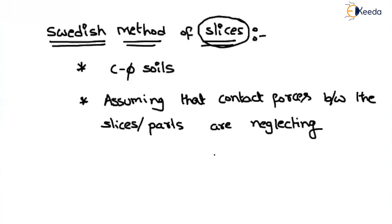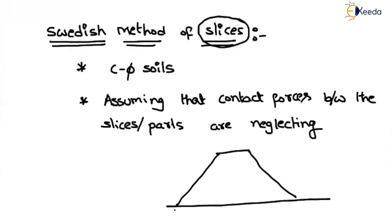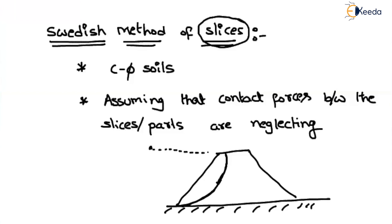Let us consider an embankment of finite slope and assume that the failure plane is somewhere like this. This entire soil mass is failing by rotating with respect to some common point — let us say the point of rotation is O. The radius of rotation is equal to R. In this method, this failure mass will be divided into some number of parts according to our convenience.